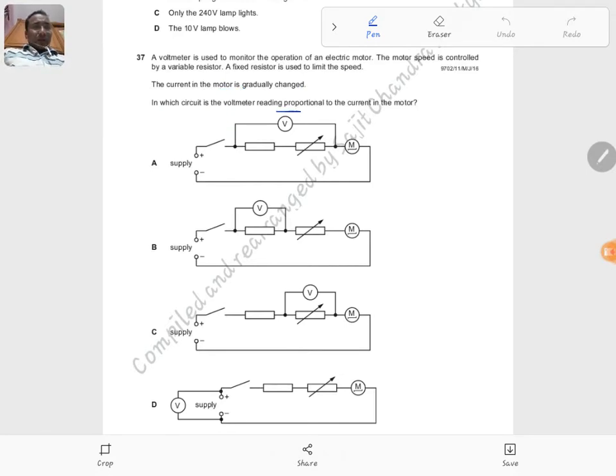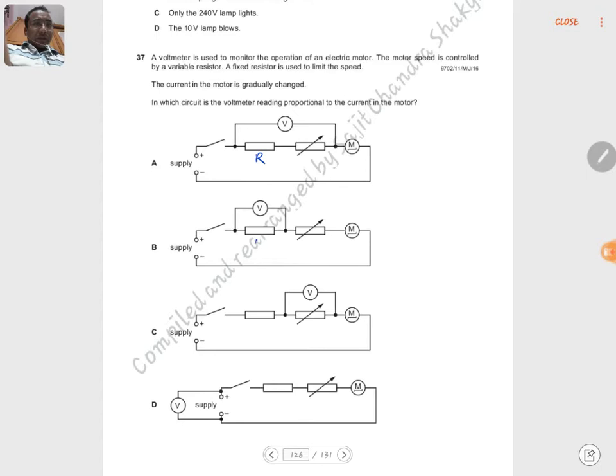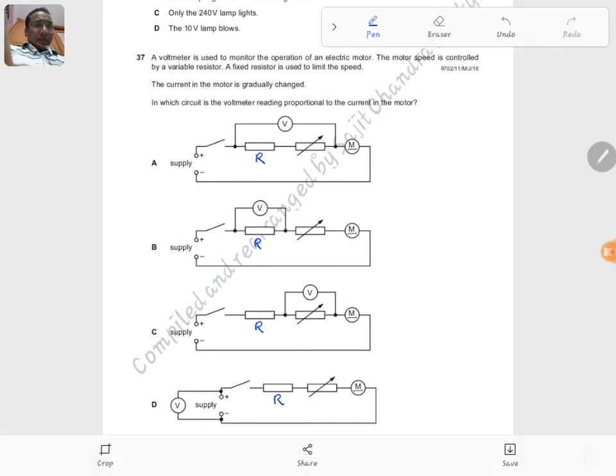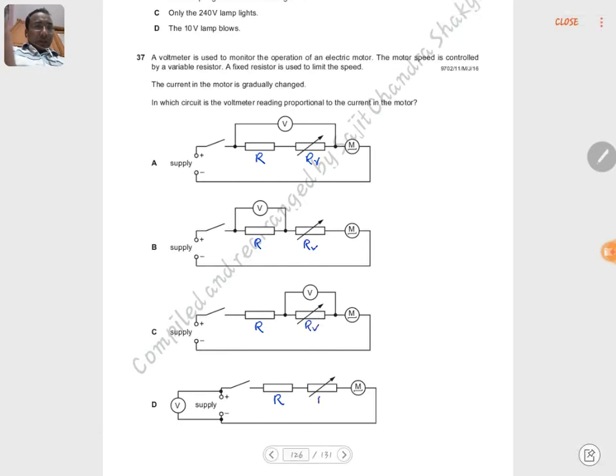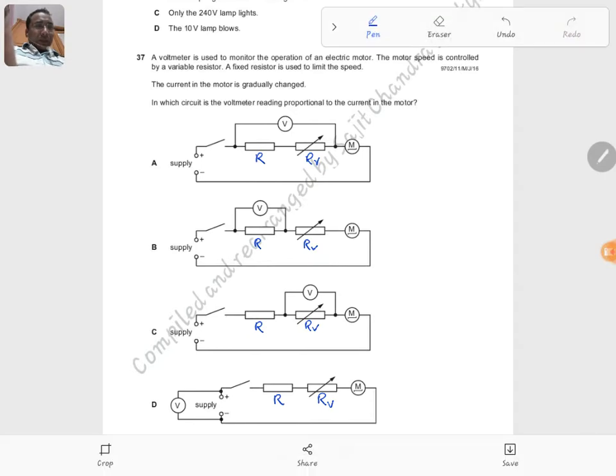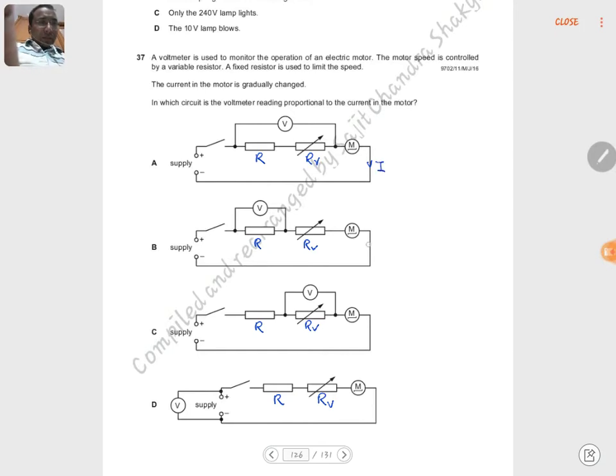In which circuit is the voltmeter reading proportional to the current in the motor? In the first case, let's mark all the resistors. This is the fixed resistor, and this is the variable resistor RV. Let us label the current as well, so this is current I.